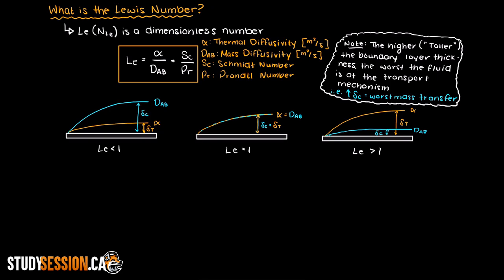Another way this could be presented is the Schmidt number over the Prandtl number. The Schmidt number compares the momentum diffusivity over the mass diffusivity of a given problem and the Prandtl number is the exact same except for the thermal diffusivity instead of the mass diffusivity.